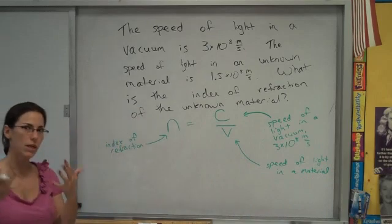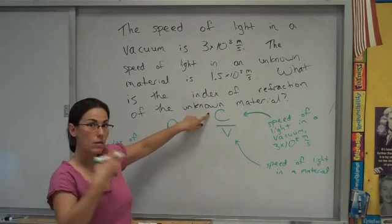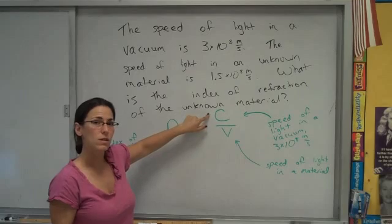Just looking at this relationship for a little while. This numerator is basically a constant, how fast light goes in a vacuum.